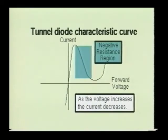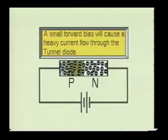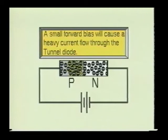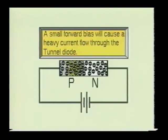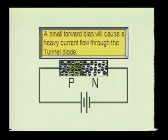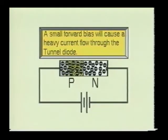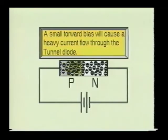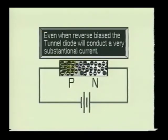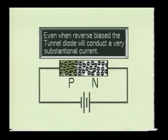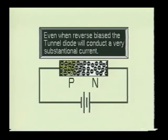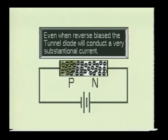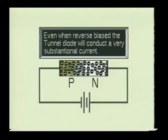The tunnel diode has a negative resistance region. In this region, the current is inversely proportional to the voltage — an increase in voltage will result in a decrease in current. Because the depletion region in a tunnel diode is very narrow, it does not constitute much of a barrier to the electron flow. A small forward bias will cause the majority charge carriers to cross the depletion region. When this occurs, the majority charge carriers are said to be tunneling through the barrier. When the tunnel diode is reverse biased, the majority charge carriers will tunnel through the barrier despite the fact that the junction is reverse biased, and a substantial current will flow. The reverse characteristics of the tunnel diode are linear, like that of a resistor.